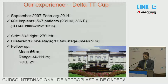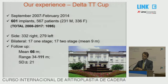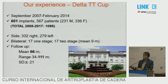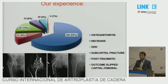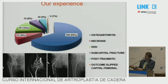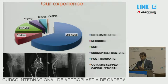Let's go to the clinical experience. We started using this cup at the launch of the material in September 2007. Up to February 2014, we implanted 601 implants. Until last year, the total number is almost 1,100. These are the diagnoses of the patients operated on. The main cause was osteoarthritis. But it's very useful in difficult cases where bone is weak and bone quality is poor, because of the high osteoconductive, osteoinductive, and osteointegration properties.